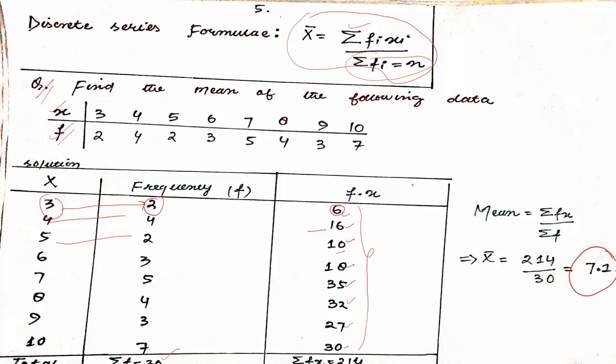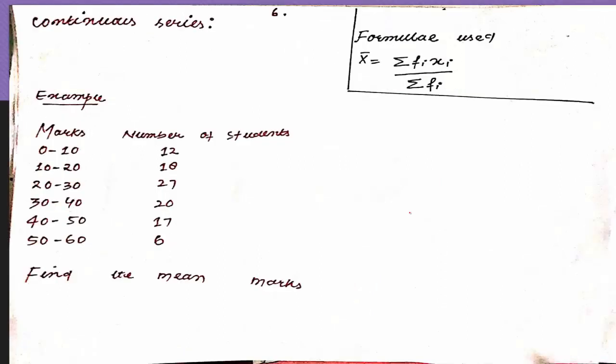So that is how you can solve questions of mean when given in discrete series. Now here is one more question given in continuous series. If you have a question in an examination with continuous series, how do you calculate the mean?